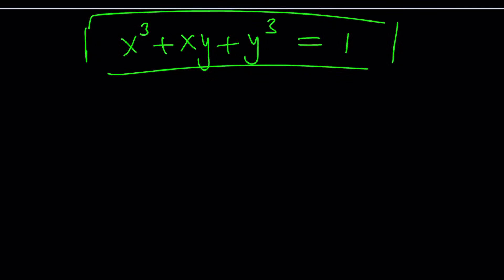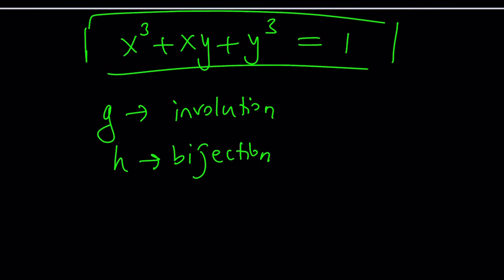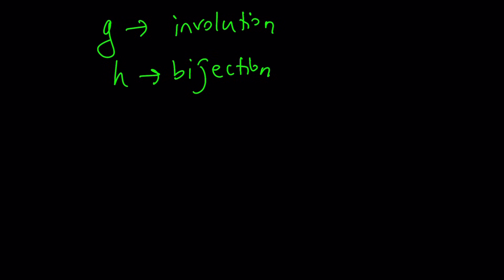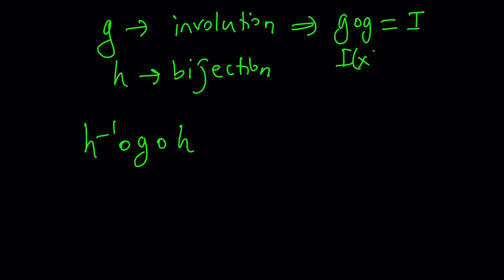If you're still around, watch this. We can take an involution — suppose g is an involution. Then we take a bijective function h so that it can be inverted. We're going to sandwich g between h and h inverse, forming a really weird composed function: h inverse composed with g composed with h. Now, g is an involution, so g composed with g is the identity — let's call that i, where i of x equals x.